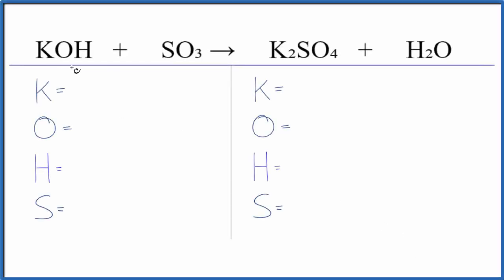To balance this equation, KOH plus SO3, that's potassium hydroxide plus sulfur trioxide, count the atoms up on each side.